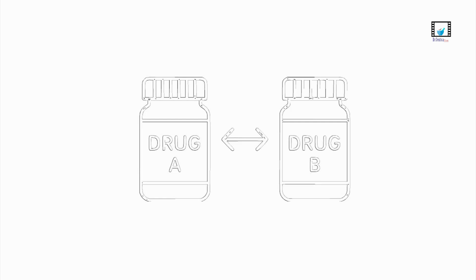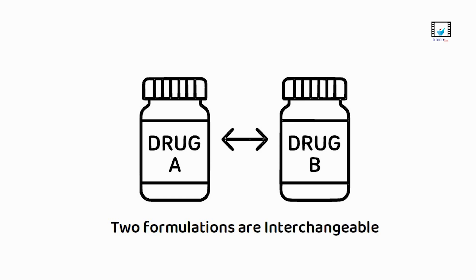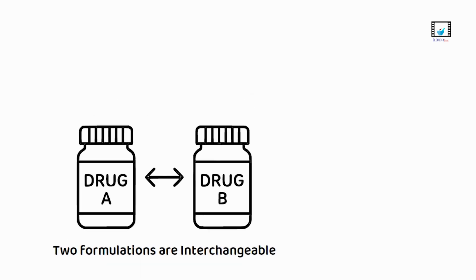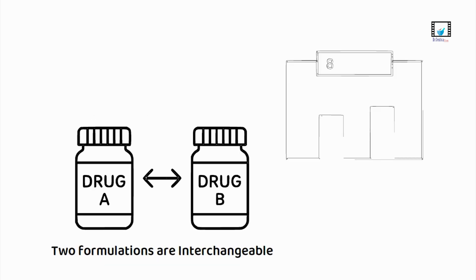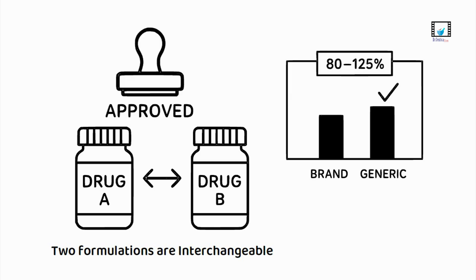When comparing drug products or assessing bioequivalence, regulators rely on AUC to determine if two formulations are interchangeable. If the generic product's AUC falls within 80 to 125 percent of the brand name product's AUC, it is generally considered bioequivalent and approved for use as a substitute.